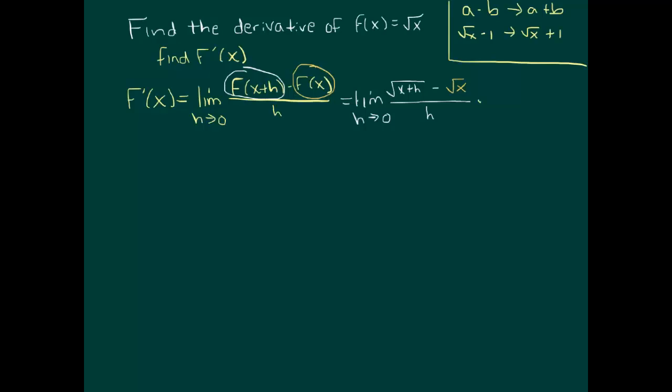So with that in mind, if we multiply the top by square root of x plus h plus square root of x, again, viewing this as like my a and that as like my b.